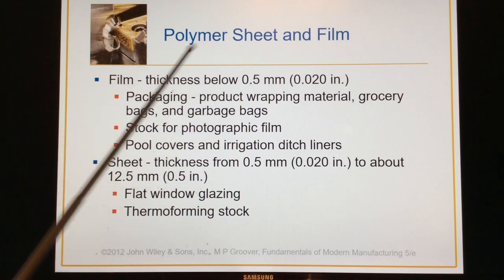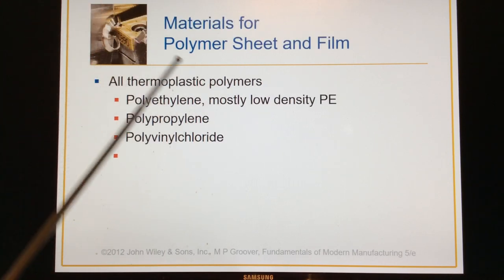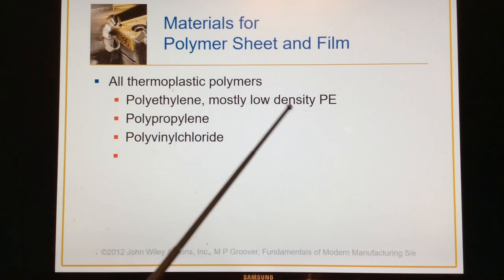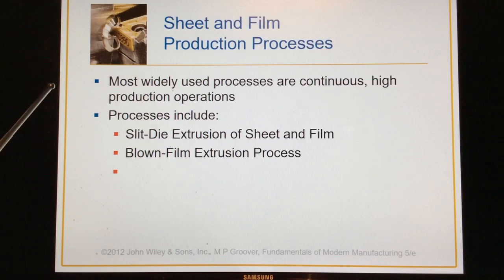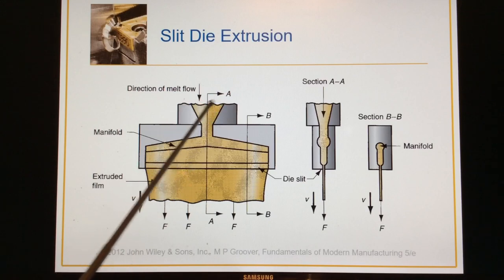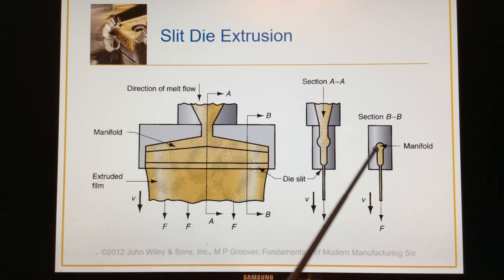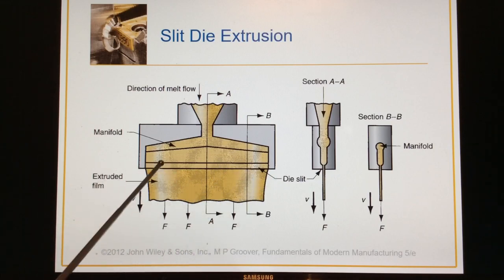We can do sheet and film too, from about 20 thousandths of an inch thick — so not very thick. There are a lot of different applications for sheet and film. Most of the material is polyethylene, the lion's share of it, with some polypropylene and some vinyl. There are two different types: slit die extrusion, which is how they make sheet and film, and then there's also the blown film extrusion process. Here is the end of the extruder barrel, and it comes into this die, which fans and thins it out into a real thin sheet.